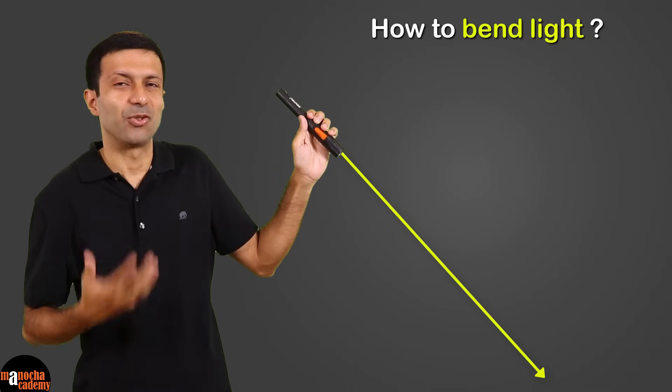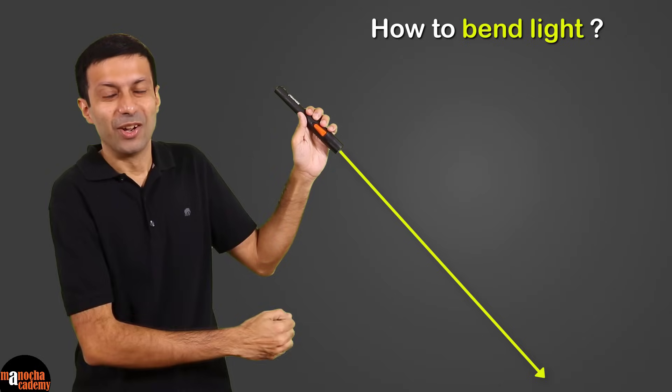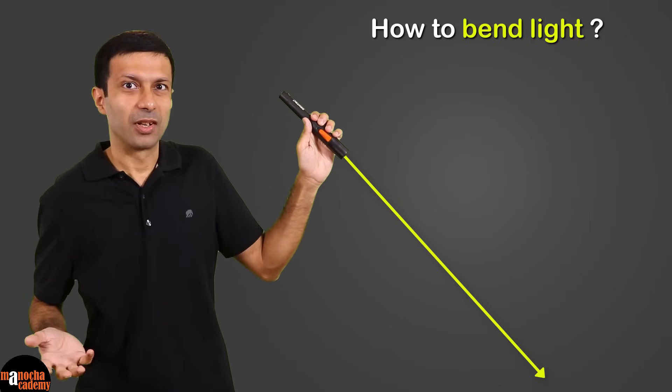Now how do I bend this ray of light? I can't just grab the ray of light and bend it, right? So what do you think I need to do to bend the light?